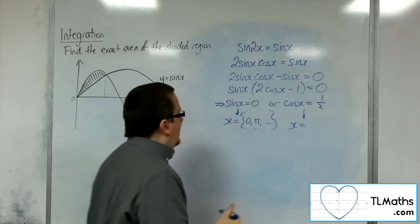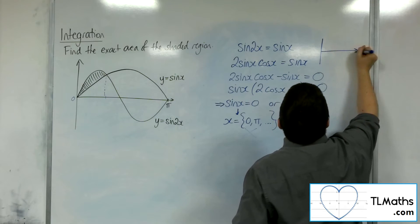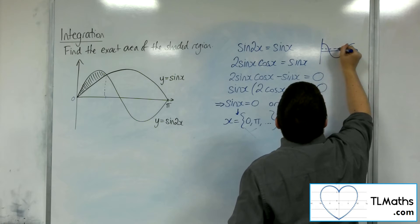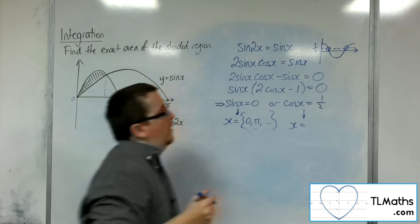OK. So cosine of x equals 1 half. So cosine of x looks like this. There's 1 half. So it's looking like this value here is going to be very promising for us.